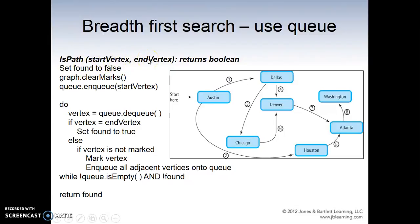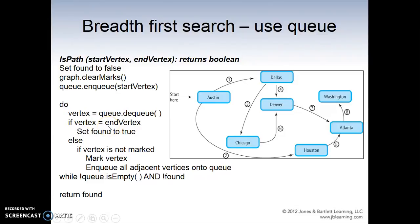So let's look at the breadth-first search algorithm: start vertex and end vertex. Set found to false. Then we create a mark. For breadth-first search, you just use a queue instead of a stack — we push into the queue, which is first in, first out. We enqueue Austin as the start vertex. If Austin equals Washington — no — then we do else: if vertex is not marked, we mark Austin as visited and enqueue all adjacent vertices. Adjacent vertices could be Dallas and Houston. Now we have Dallas and Houston in the queue.